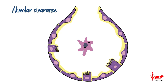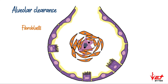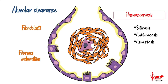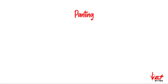Some particles neither get solubilized nor get phagocytosed by alveolar macrophages. These particles stimulate a connective tissue reaction in which fibroblasts are activated and accumulate around the particles. The inhalation of certain dust particles causes fibrous induration of the lungs, isolating that part from the lung — this is called pneumoconiosis. Based on the type of particle, it can be called silicosis (silicon particles), anthracosis (carbon particles), or asbestosis (asbestos particles).